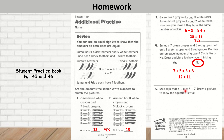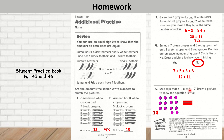Number 5: Milo says that 6 plus 8 is equal to 7 plus 7. Draw a picture to show the equation is true. I draw 6 circles and add 8 more — count all together that is 14. Then for 7 plus 7, I draw 7 circles and add 7 more. 7 plus 7 is doubles, which is 14. So 14 is equal to 14.